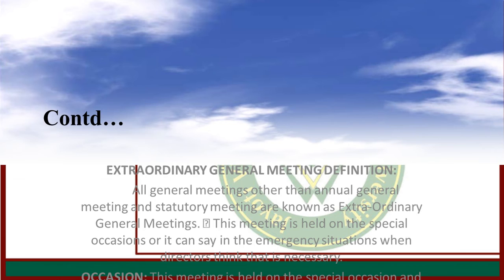Extraordinary General Meeting: All general meetings other than AGM and Statutory Meeting are known as Extraordinary General Meeting. This meeting is held on special occasions or in emergency situations when the director thinks it is necessary. The director will have to send notice of the meeting to all members of the company at least 21 days before the meeting.